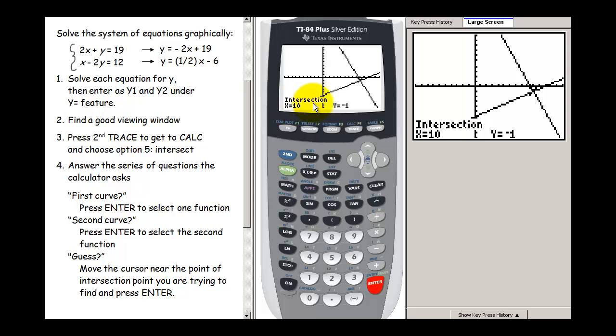I know that I have found my intersection point when it actually says intersection and the value here is x equals 10, y equals negative 1. So our solution is the ordered pair (10, -1).